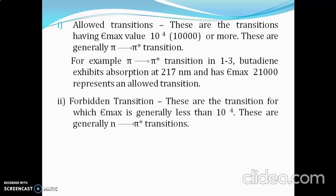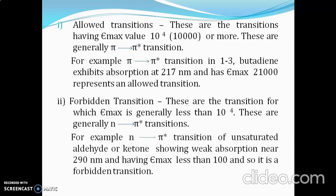Forbidden transitions have an Emax value less than 10,000. Generally this is the n to pi transition because it is a weak transition. For example, the n to pi transition in unsaturated aldehydes and ketones is shown at 290 nm. It is forbidden because its Emax value is only 100.